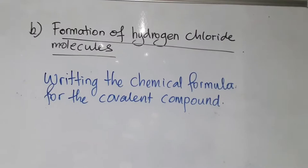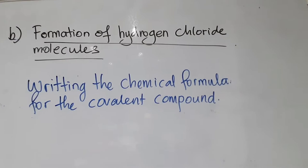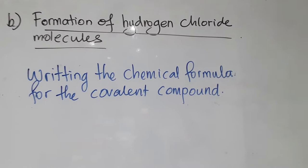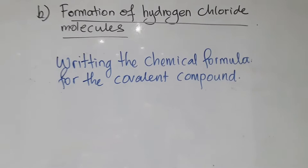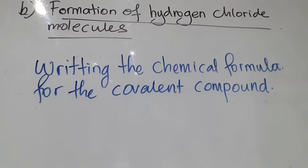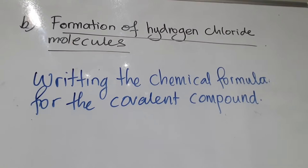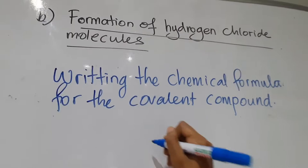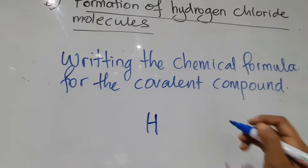Now we're going to do the second covalent compound, which is hydrogen chloride molecules. Before we go further with the diagram or essay, it's better to form the equations first so that it will be easier to organize your diagram and essay writing. To write the chemical formula, first analyze what elements are involved. For hydrogen chloride, the elements are hydrogen (H) and chlorine (Cl).